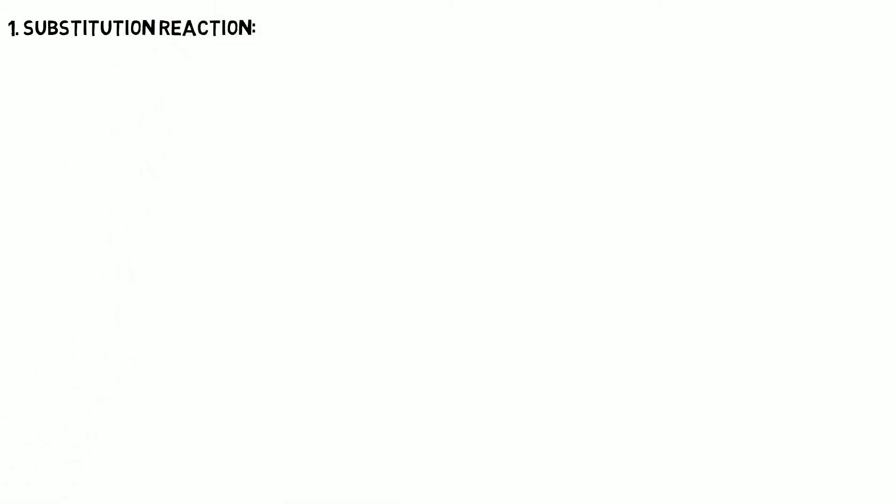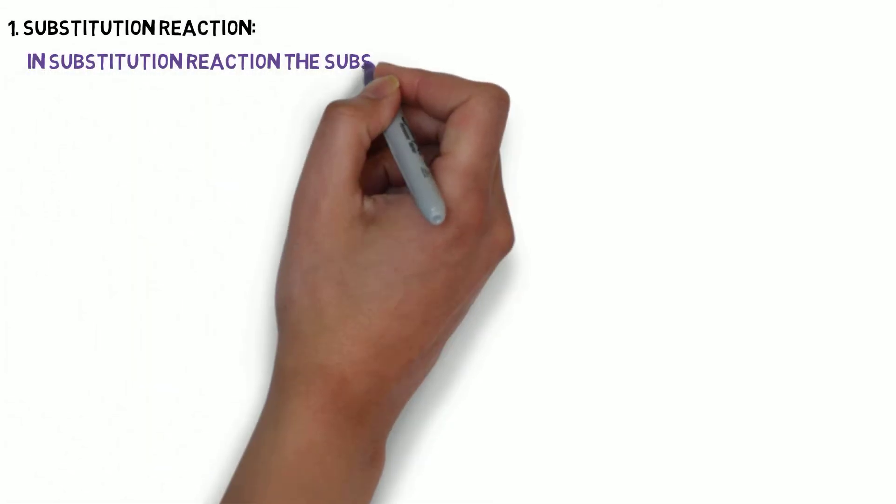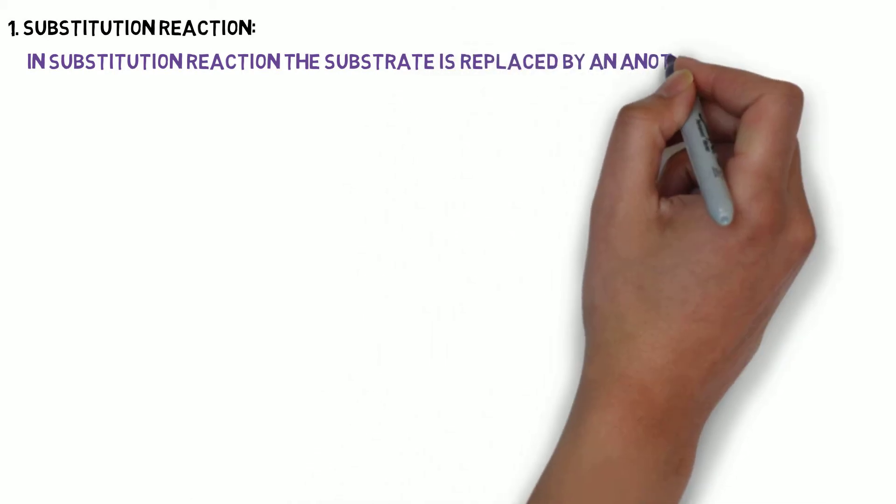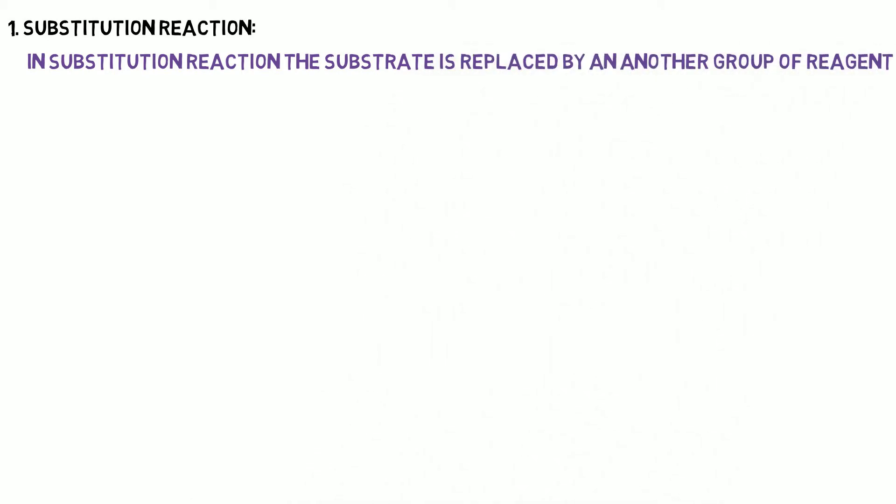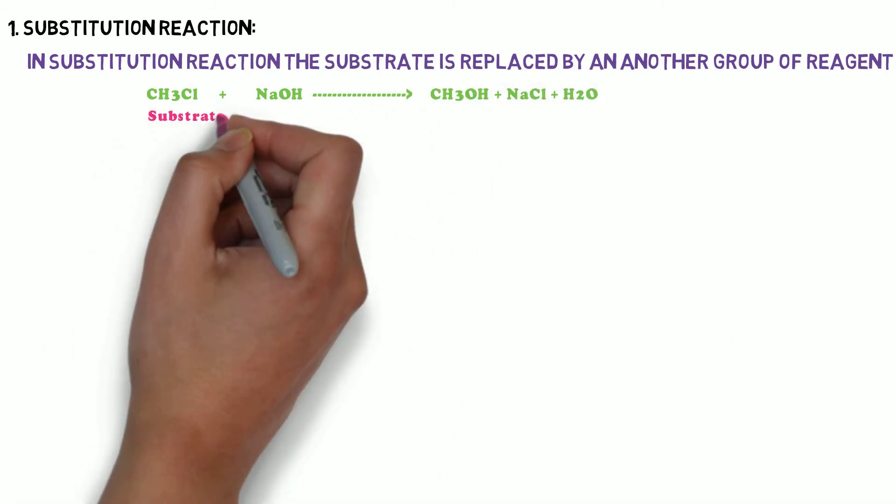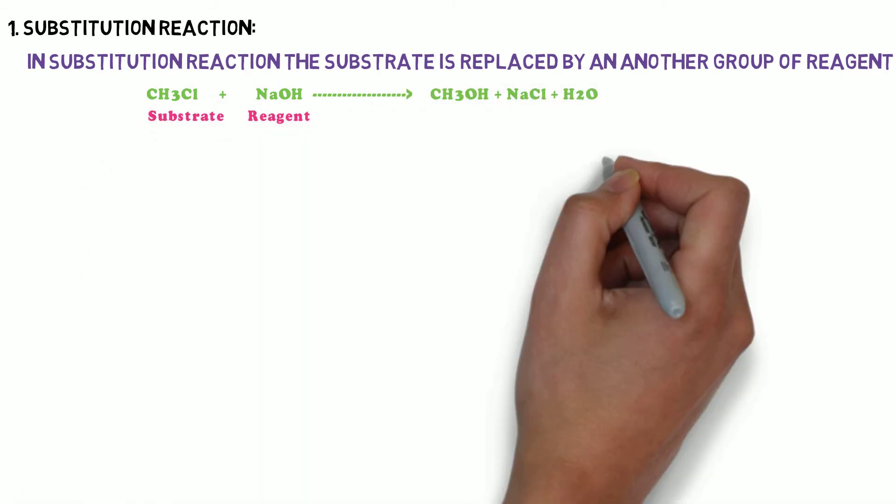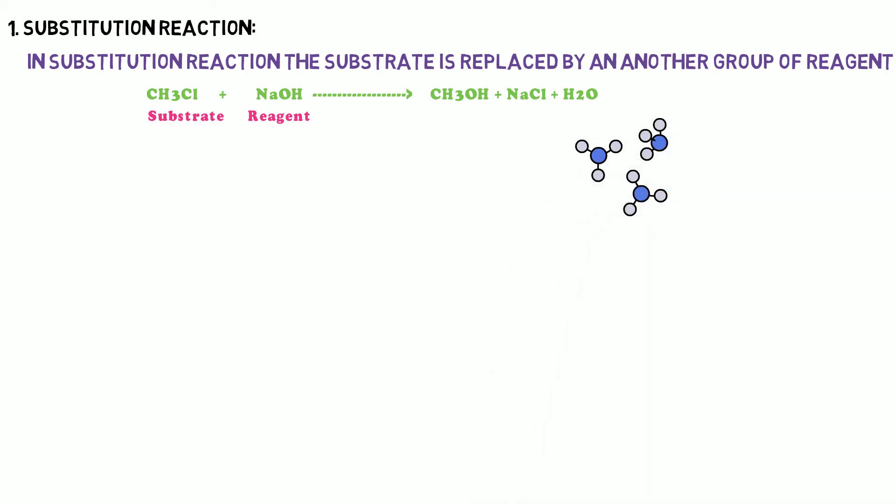First we are going to see about substitution reaction. In substitution reaction, the substrate is replaced by another group of reagent. In this CH3Cl plus NaOH, the chlorine atom is replaced by the OH ion. So it is called substitution reaction.